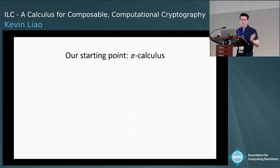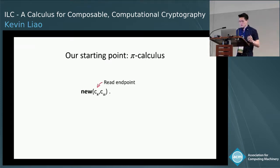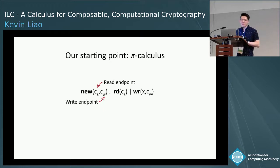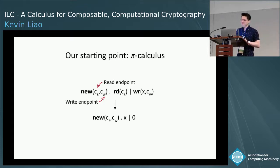Our starting point is the pi-calculus, which has been used extensively for security analysis in the symbolic model of cryptography. In the pi-calculus, channels are unidirectional — they have a read endpoint and a write endpoint. A process can listen on the read endpoint and another can write on the write endpoint. When evaluated, the reading process gets the value x, and the writing process goes to the null process 0.